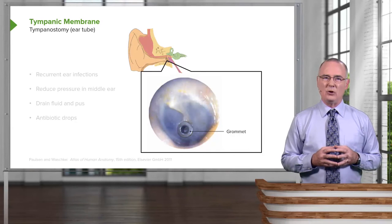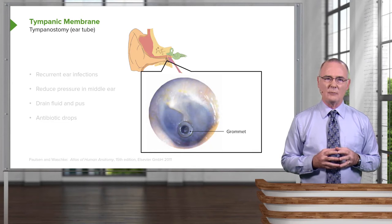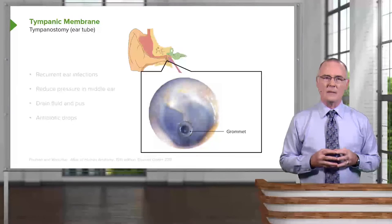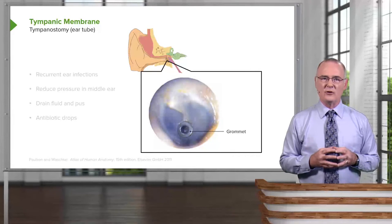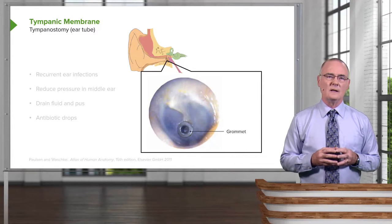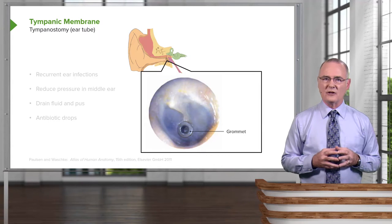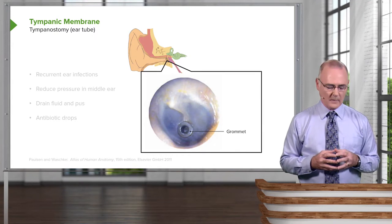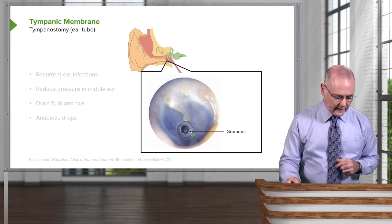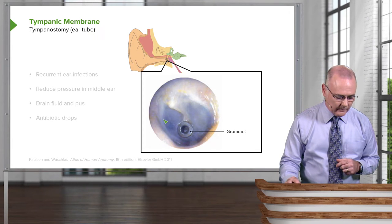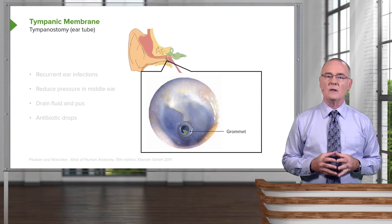There is a clinical application for you to understand with respect to the tympanic membrane. This procedure is referred to as a tympanostomy — essentially the insertion of an ear tube. If we take a look here, you see the tympanic membrane, and then you have the tube or grommet right through here, allowing communication between the middle ear and the external ear.